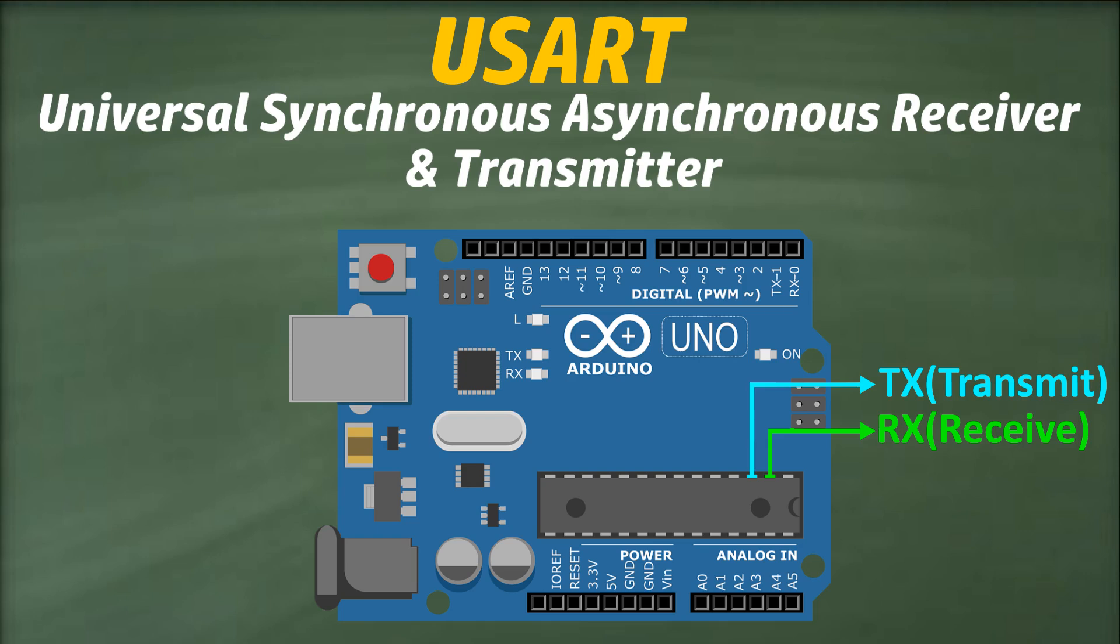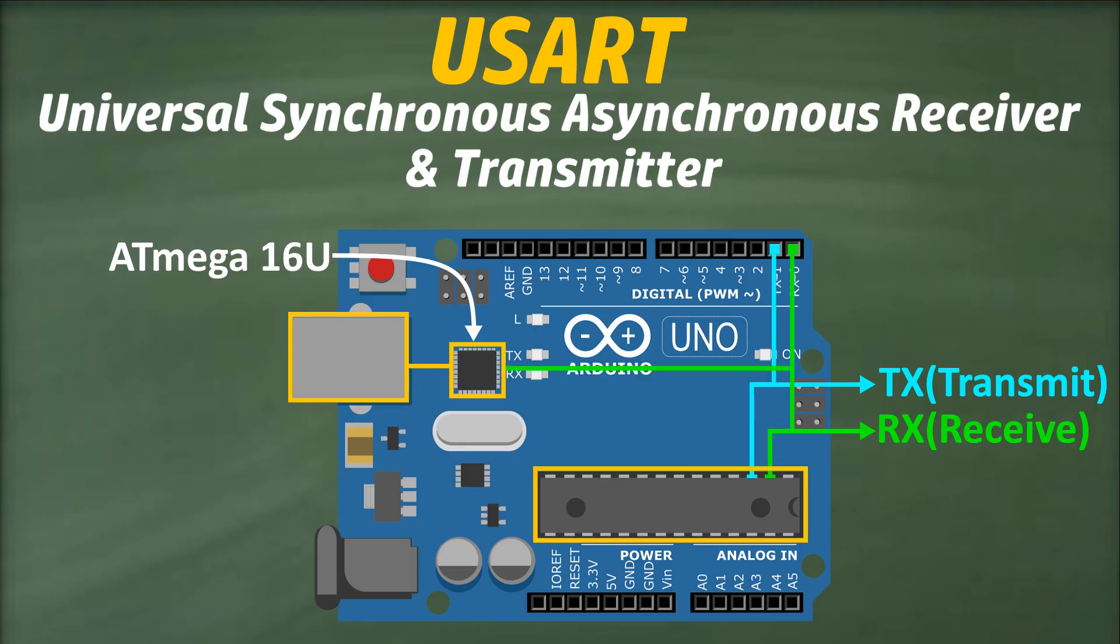So basically, our computer is connected to the USB jack of the Arduino Uno, which is linked to another microcontroller, ATmega16U, which in this case acts as a USB-to-serial converter. It takes the incoming USB data, converts it to serial data, and transmits it via the RX pin to the ATmega328.